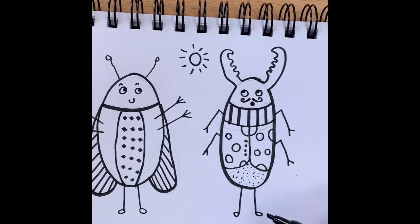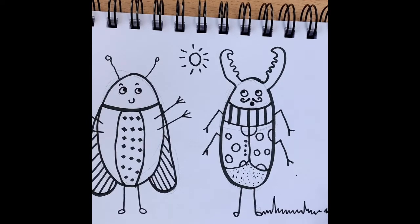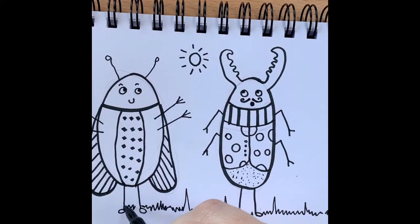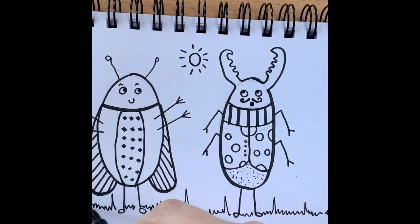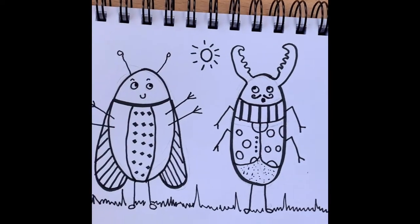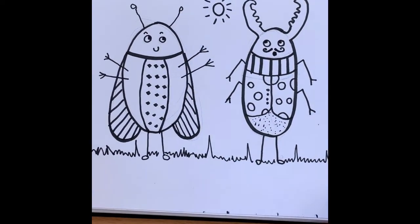Now finally, let's finish it up with some grass. Ziggy zaggy lines. And ziggy zaggy lines all the way across. I wonder how many of you have seen lots of bugs in the garden this weekend. These are lots of big lines. And various beetles and things. So that's our finished beetles.